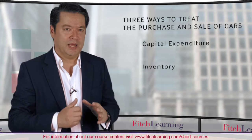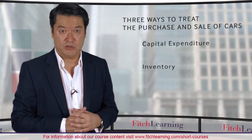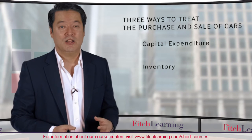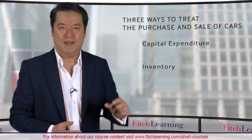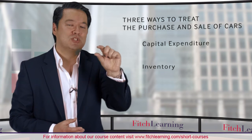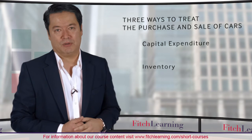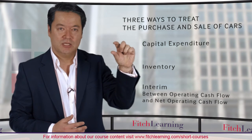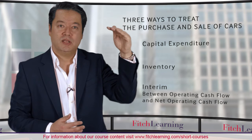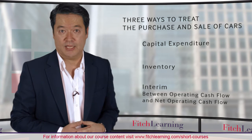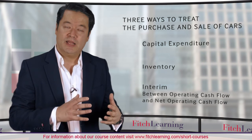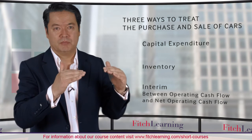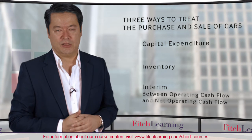That is the kind of manipulation that we look out for and that we do have to be careful about. There is a third way. The third car rental company that I've seen really can't make up their mind and they treat it as something in between working capital and a capital expenditure item. They set up an interim level between operating cash flow and what they call net operating cash flow. You have to be very careful with the treatments that treat it as net working capital or as this intermediate level of calculation.